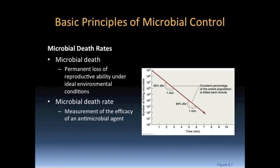Just as we defined microbial growth based on changes in microbial populations, we will do the same with microbial death. Microbial death is accomplished when a technique or chemical has resulted in damage to the bacterial cell that prevents the cell from reproducing even when exposed to a suitable environment. Microbial cells that can no longer reproduce cannot contribute to microbial growth. When a microbial population is exposed to a microbicidal agent, the population does not die instantaneously.